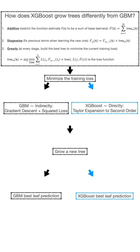At every stage, they build the best tree to minimize the current total loss on the training set. Depending on the form of the loss function, training loss minimization could be very difficult. For this, GBM and XGBoost took two different paths.